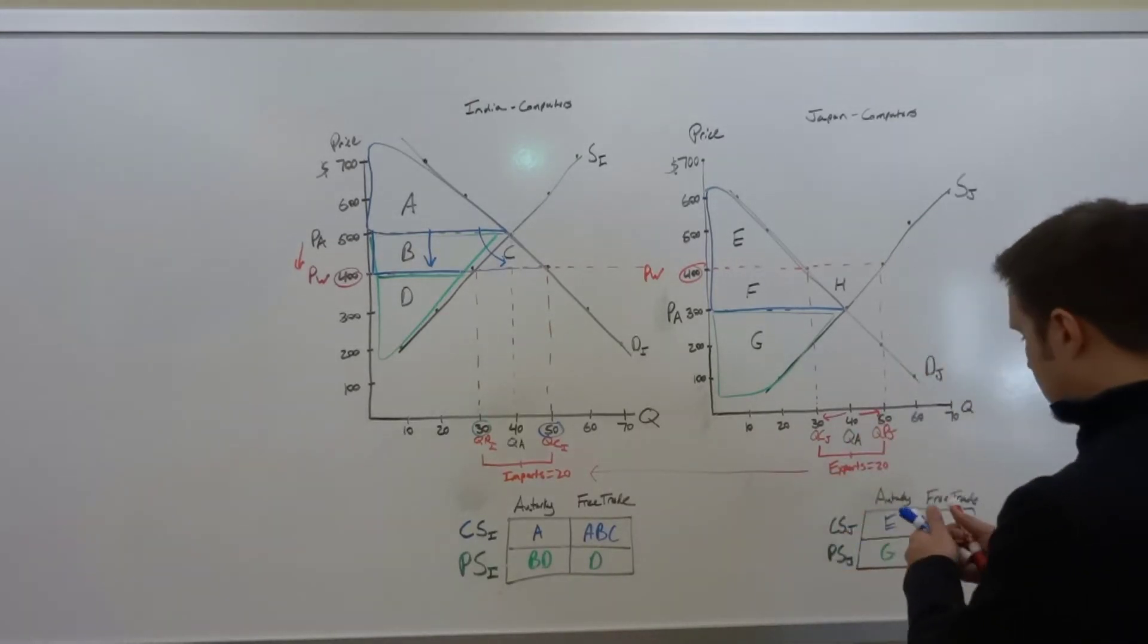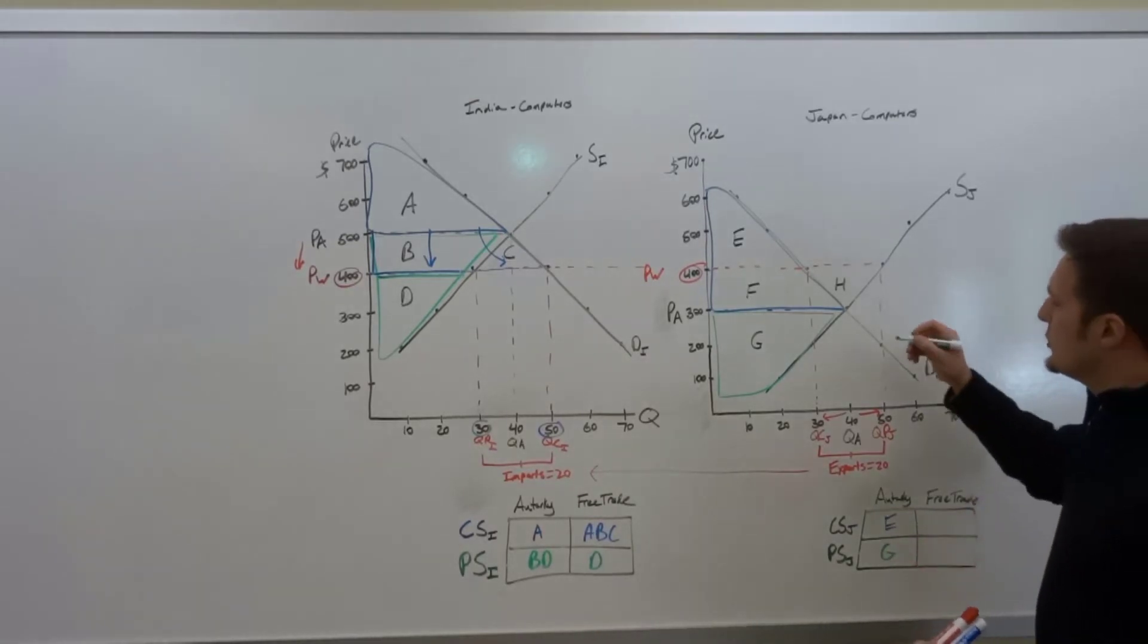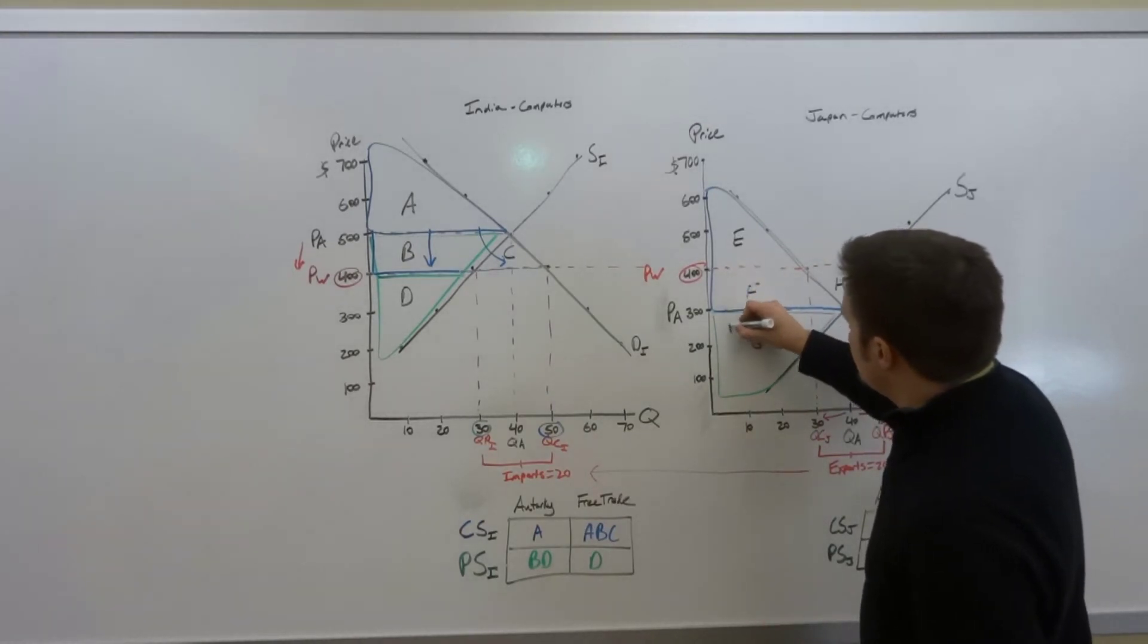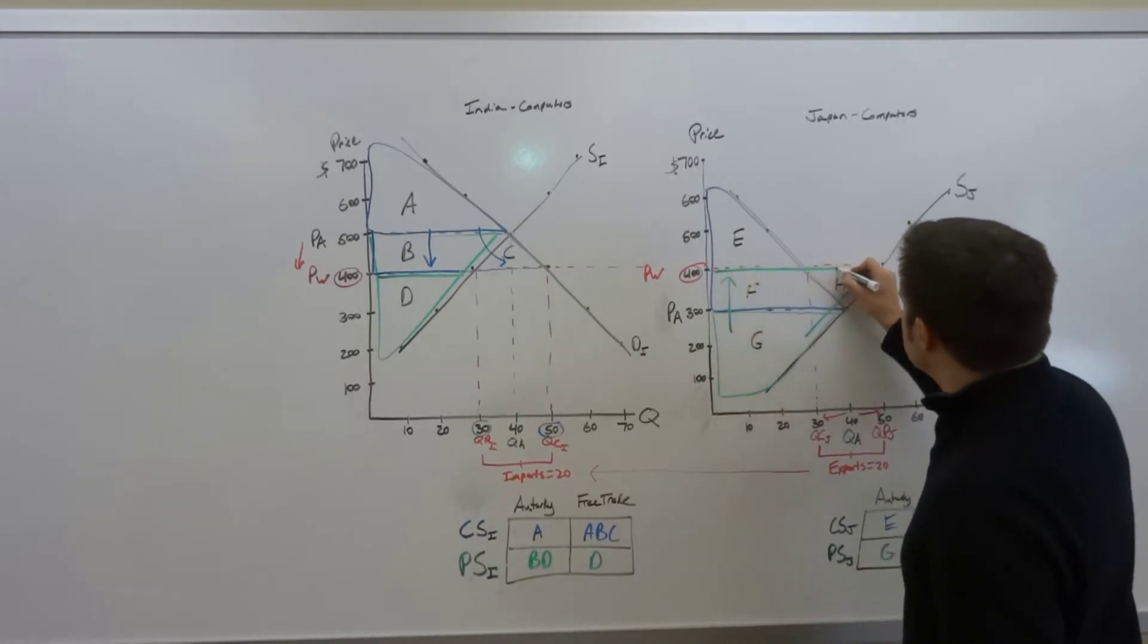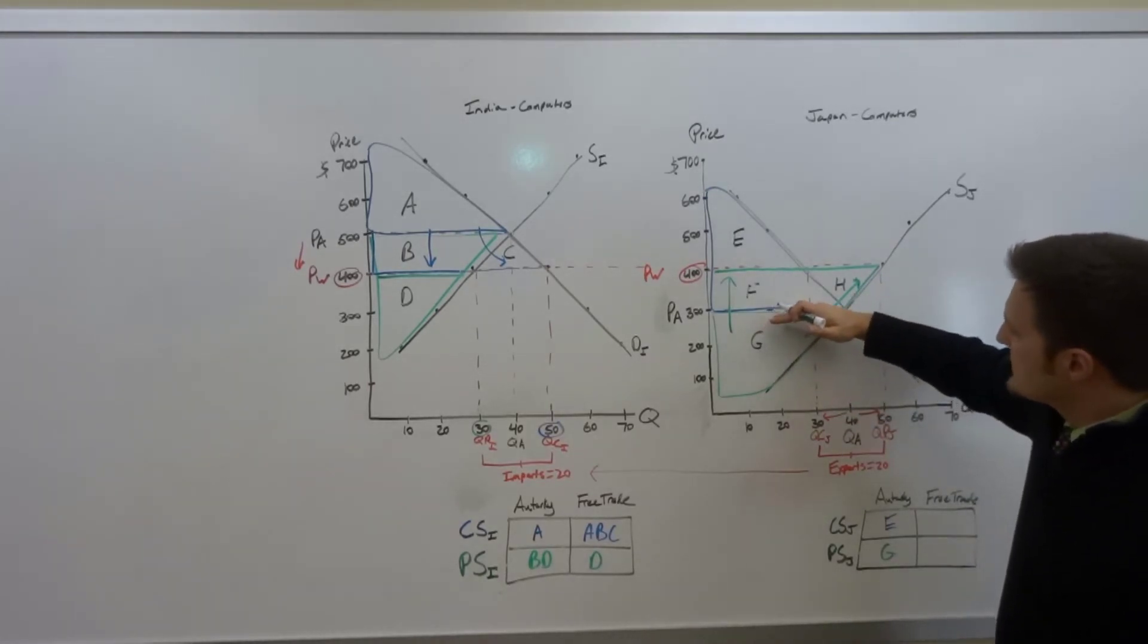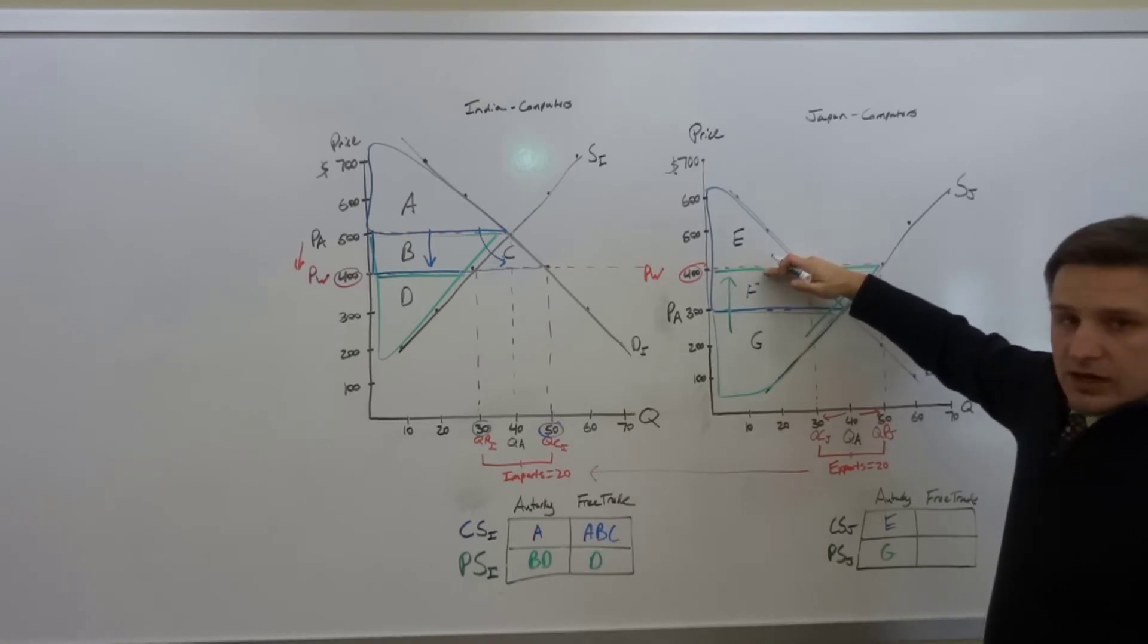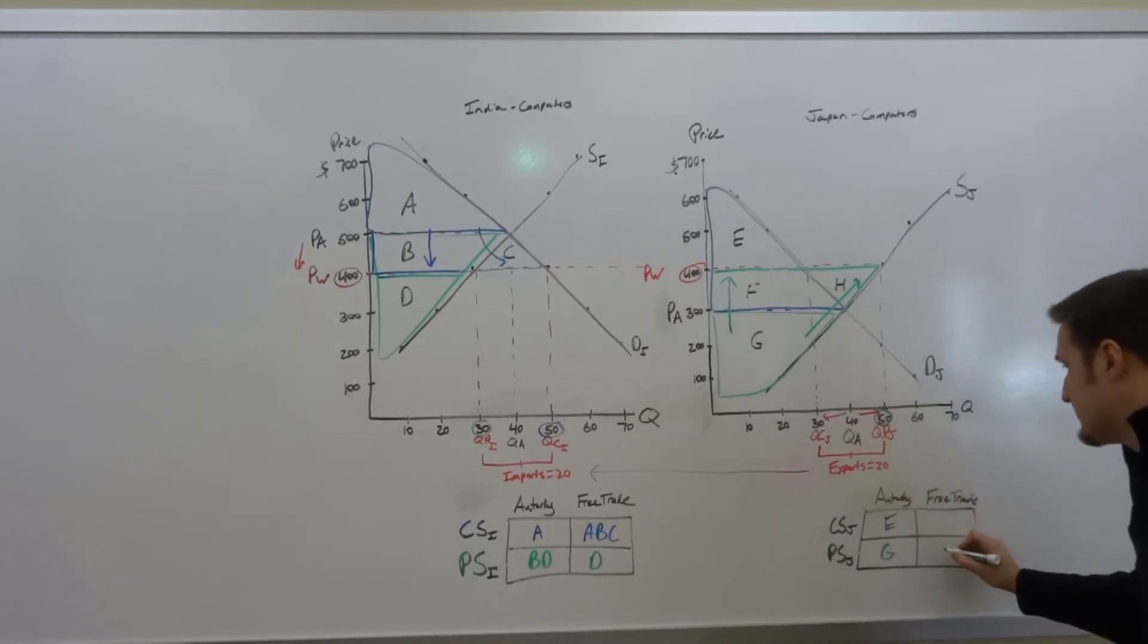So what about the consumer producer surplus? Well in this case, it's the producers that are really going to win, because with that new higher price, the producers are going to see gains of area F and area H. That is to say that the producer surplus now rises up to the $400 price and extends all the way over to this new quantity that they are producing of 50. So the new producer surplus is going to be G, F, and H.